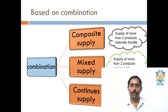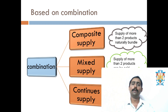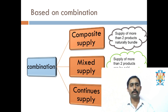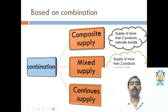The next one is continuous supply — a kind of supply where supply is done on a regular basis. For example, every month we get four regular supplies; in a month there are four weeks and every Monday we get the supply. So we regularly receive the products or regularly enjoy the service. Three types under combination: composite supply, mixed supply, and continuous supply.